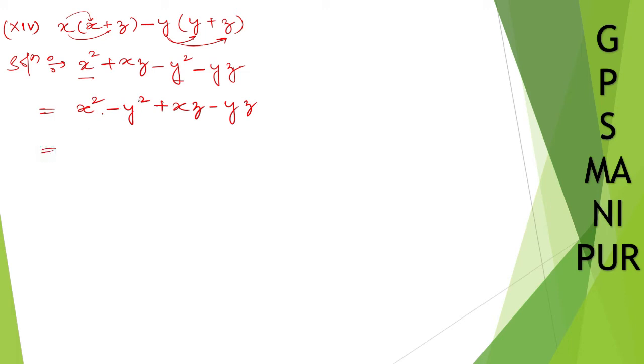a square minus b square. We can take something like this: a plus b, a minus b. That is x plus y, x minus y.